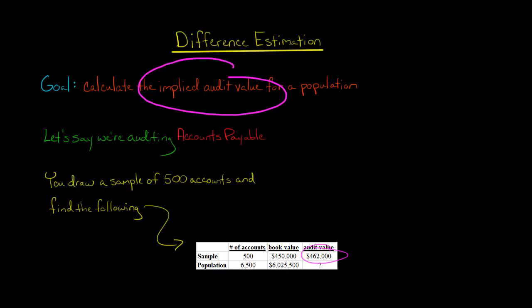The question is, how do we extrapolate this audit value from our sample to get an idea what should be the accounts payable per the auditors for the entire population? Even though we haven't observed the population, how do we use what we've got from the sample to figure this out?